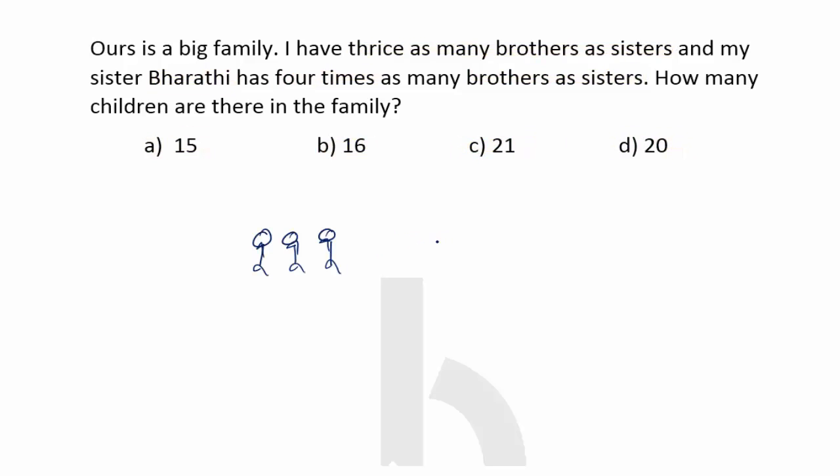Let's say there are three boys and two girls. In this example, each boy has two brothers and two sisters, whereas each girl has one sister and three brothers. Now, the options are not given exactly in terms of boys and girls.